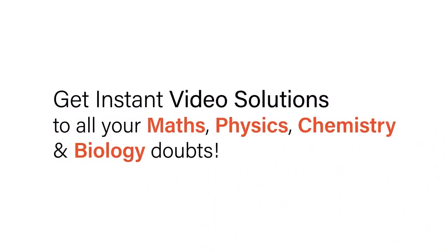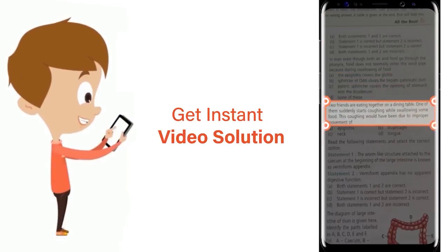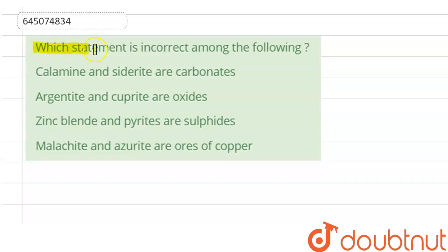With Doubtnut, get instant video solutions to all your math, physics, chemistry, and biology doubts. Just click the image of the question, crop the question, and get instant video solution. Our question is: which statement is incorrect among the following?